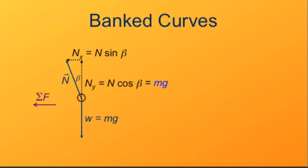The N sine beta then provides the entirety of the centripetal force for the system. So then it has to be mv squared over r.